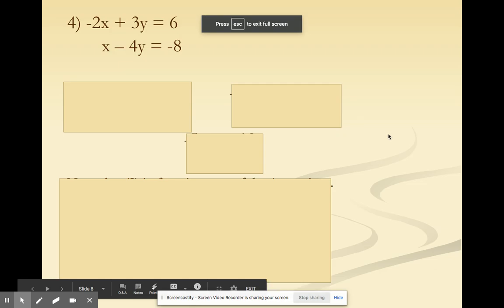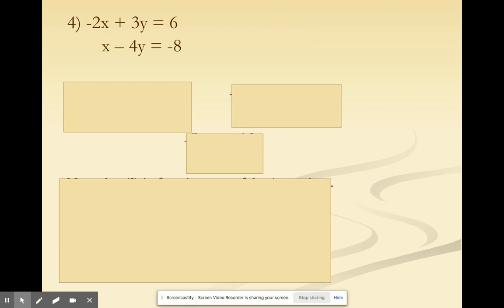I kind of ran out of time there, but let's go ahead and move on to our next question. So this one, we have negative 2x plus 3y equals 6, and x minus 4y equals negative 8.